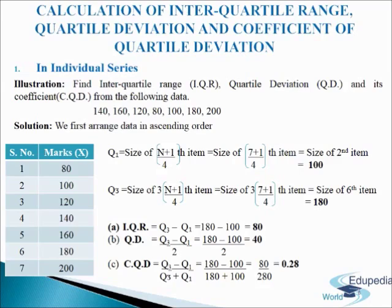In the table you can see that we have arranged the data in ascending order. Now for Q1, the formula is size of (n+1)/4th item. Here n is 7, so 7 plus 1 divided by 4 gives us the size of the 2nd item. In the table you can see that the 2nd item is 100, so Q1 equals 100. Now for Q3, the formula is size of 3(n+1)/4th item. In place of n we write 7 and after calculating we get the size of the 6th item. In the table the 6th item is 180, so Q3 equals 180.